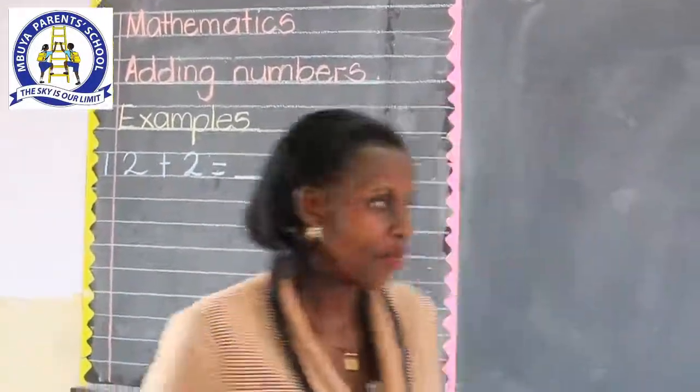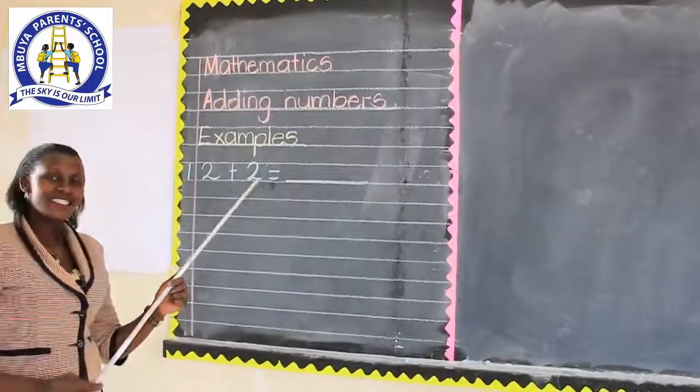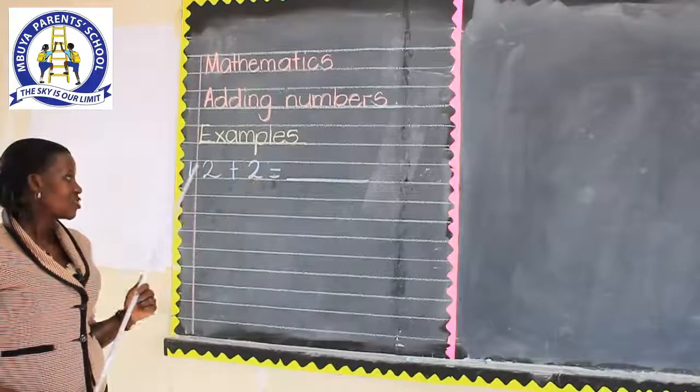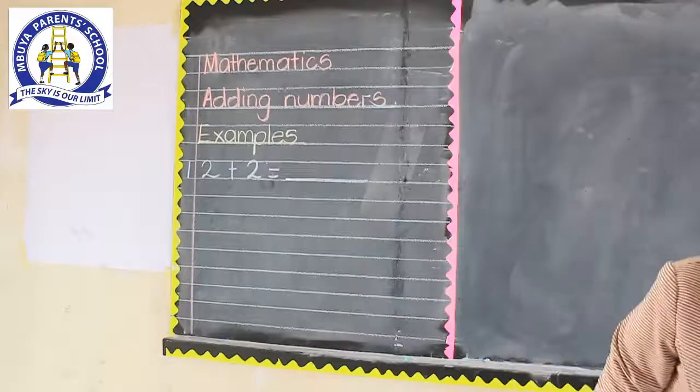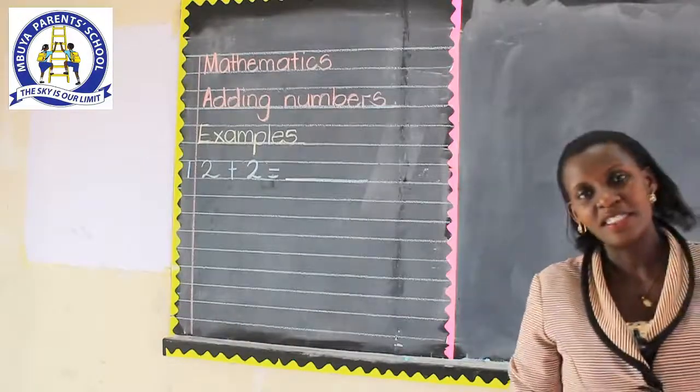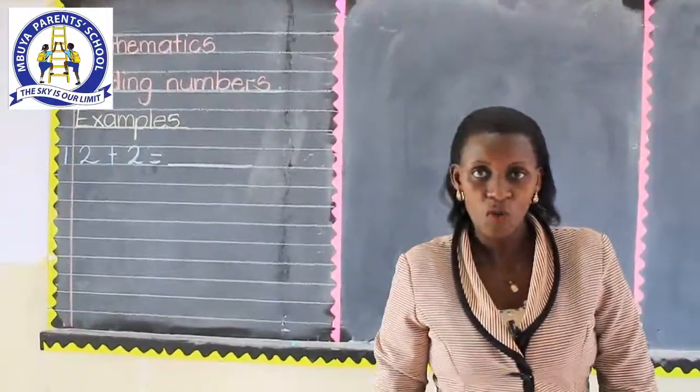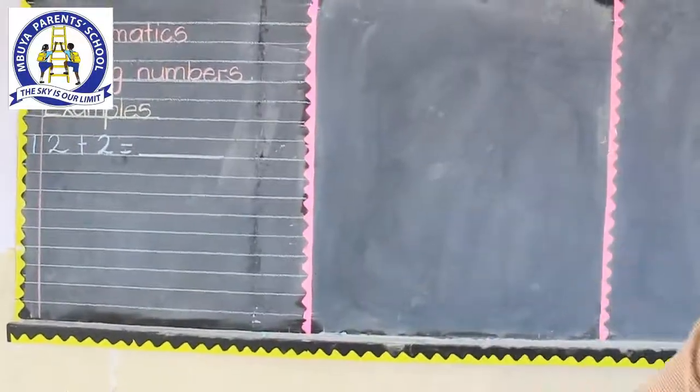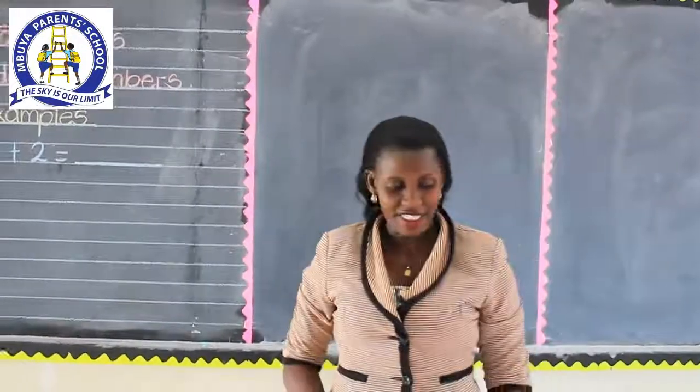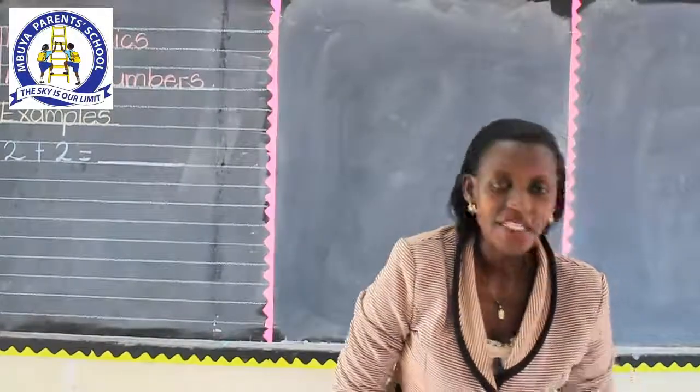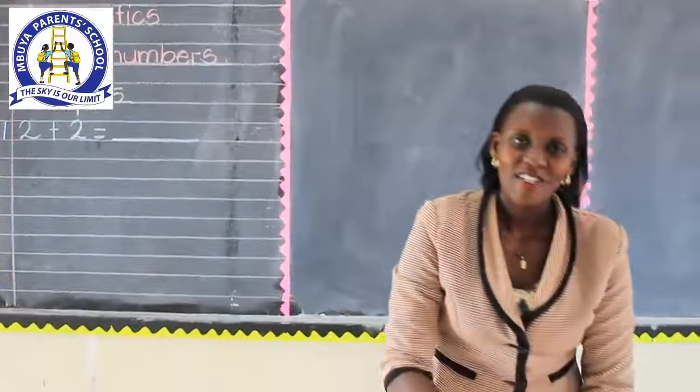For example, we have here example number 1: 2 plus 2. I believe at home you have the counters, the bottle tops. You can use any object so long as it is friendly to you. For example, I have here some oranges, which I want to use as our counters. We are saying that 2 plus 2. We count 2 oranges. This is 1, 2.